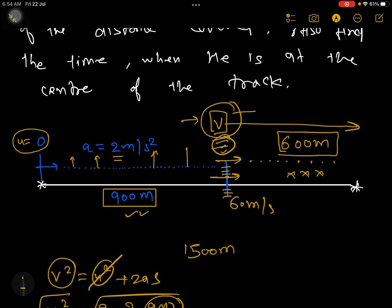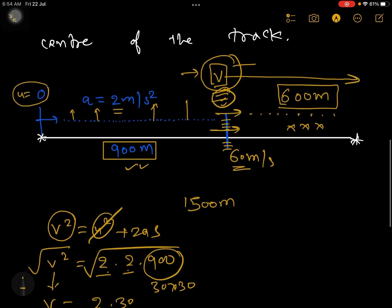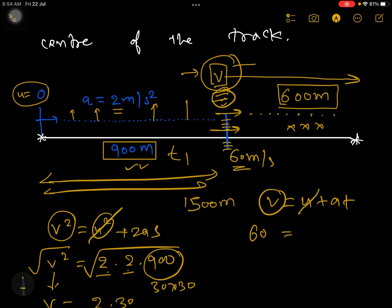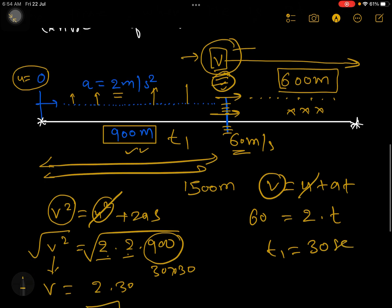Now if your velocity is 60 meter per second, then how much time you have taken here? So that time you can calculate in this journey. Suppose this time is t1. So again you apply this formula v = u + at. Now final speed we know is 60 and initial speed is 0. Acceleration was 2 into t. So your t1 is coming as 30 seconds.